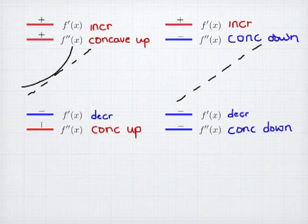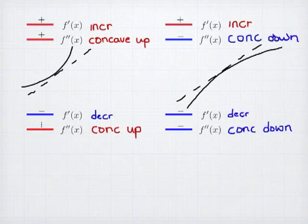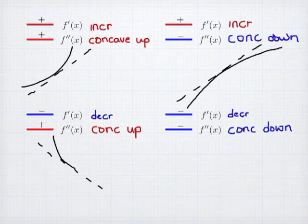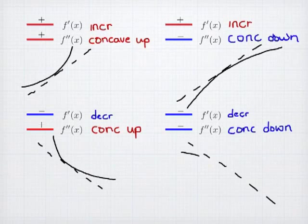Imagine taking that straight rod and bending it down — an increasing concave down shape looks like that. A decreasing function is one where as you go to the right, your function goes down. To be concave up, I bend that up, so a concave up but decreasing function looks somewhat like that. A decreasing and concave down shape is like a decreasing rod bent down.